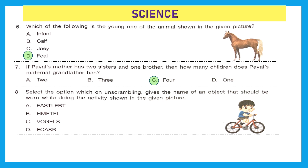Question 8: select the option which on unscrambling gives the name of an object that should be worn while doing the activity shown in the given picture. Option A gives seat belt, B gives helmet, C gives gloves, and D gives scarf. What should one wear while riding a bicycle? The right answer is option B, helmet.